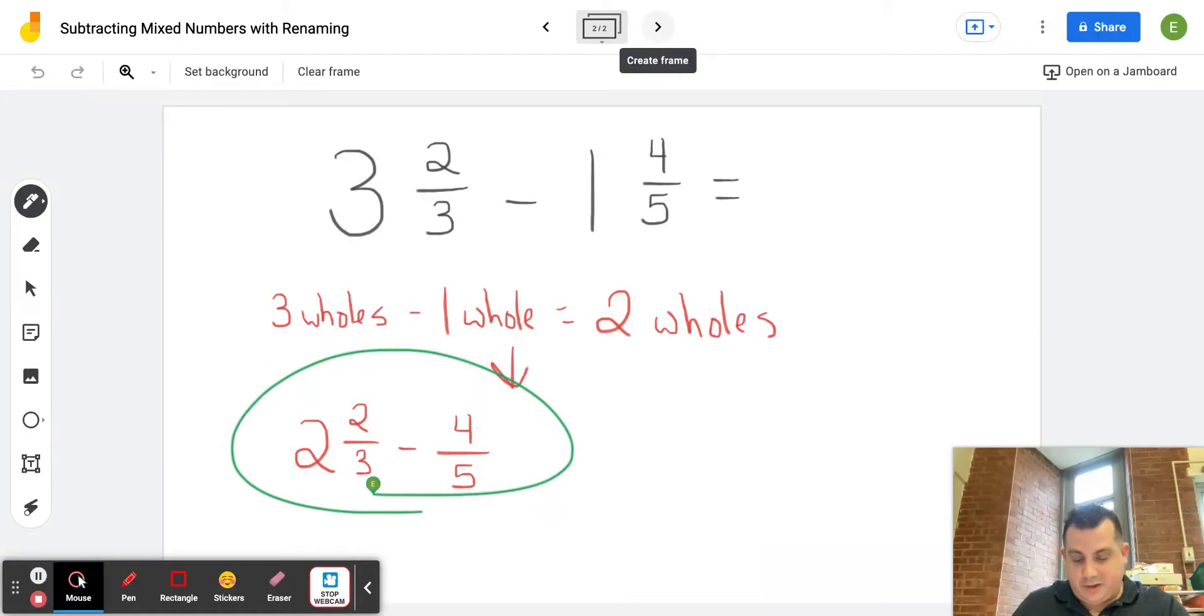So I don't have that whole anymore and that is going to really be two wholes. So now I'm working down here, two and two-thirds minus four-fifths. We'll do it all on the same page.